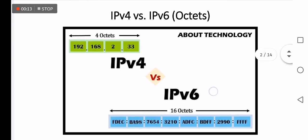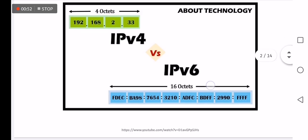IP version 4 contains four octets with a 32-bit length. Each octet is separated by a dot from its neighbors. Compared to version 6, which contains 16 octets with a length of 128 bits. Each 16 bits of v6 is separated by a colon from its neighboring 16 bits.